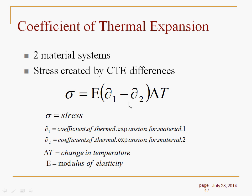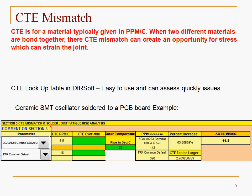It's very easy to do in DFRSoft. You basically want to identify your CTE differences between your two materials — the coefficient of thermal expansion — which will put a stress and cause a strain on your solder joint. DFRSoft has a library lookup with a pull-down where you can get the part type of concern and look at your CTE mismatch.